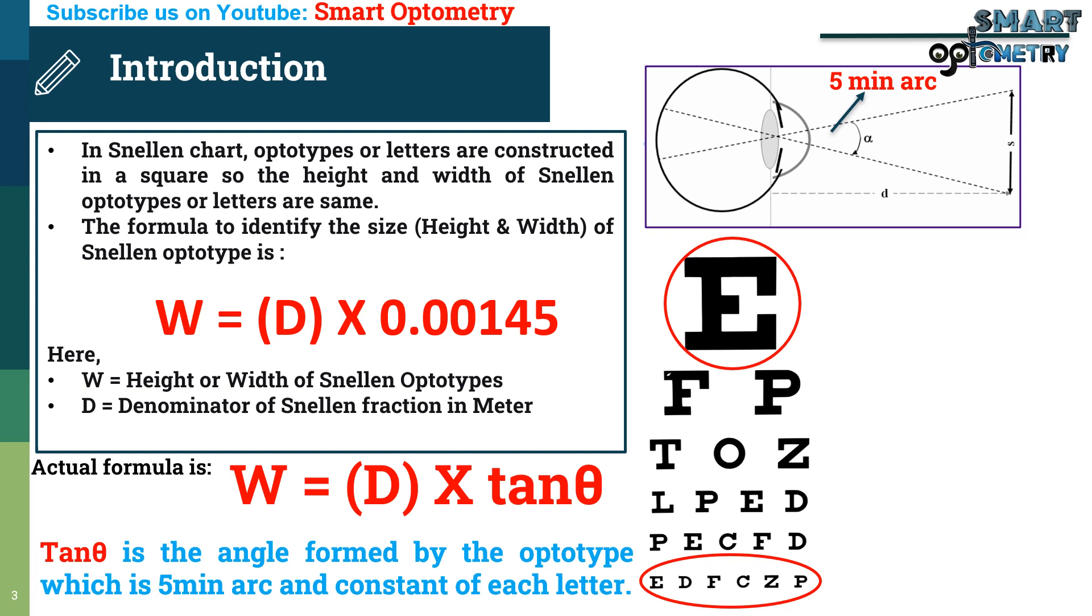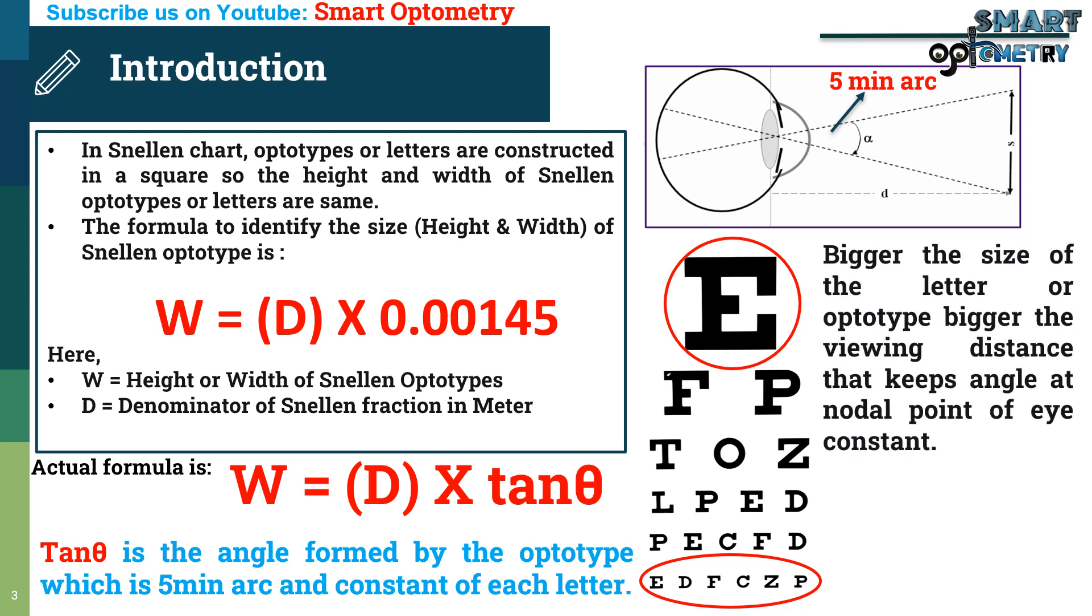Because 6 by 6 size is designed to see from 6 meter where 6 by 60 size is designed to see from 60 meter. Bigger the size of the letter or optotype, bigger the viewing distance. That keeps angle at the nodal point of eye constant. So, tan theta is constant that is 5 minute arc or 0.00145 radian.